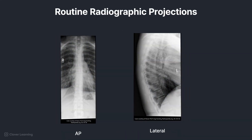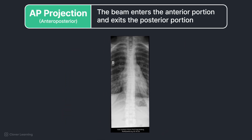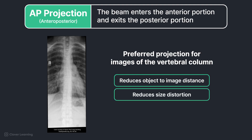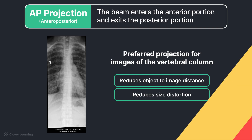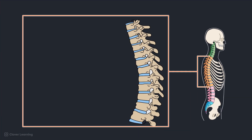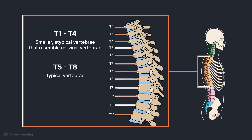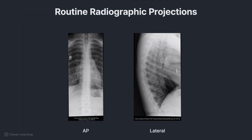The routine radiographic projections of the thoracic spine are the AP and lateral. AP, or anteroposterior, means the beam enters the anterior portion and exits the posterior portion. This is preferred for images of the vertebral column to reduce object-to-image distance and size distortion by placing the vertebrae as close to the image receptor as possible. In summary, the thoracic spine consists of 12 vertebrae numbered T1 through T12. T1 through T4 are smaller atypical vertebrae resembling the cervical vertebrae; T5 through T8 are typical vertebrae; and T9 through T12 are larger and resemble the lumbar vertebrae. Routine radiographic projections include AP and lateral. In the next lesson, we will take a closer look at the radiographs to identify this anatomy.